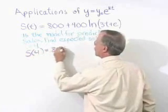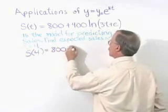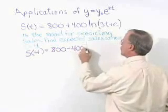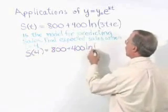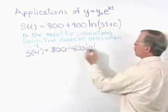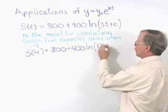That would be 800 plus 400 times the natural log of 3 times 4 is 12 plus e.